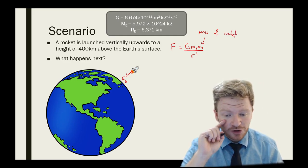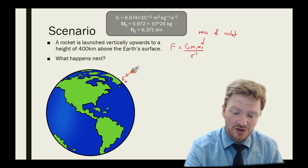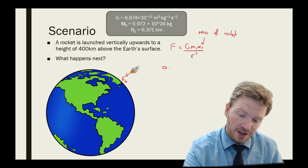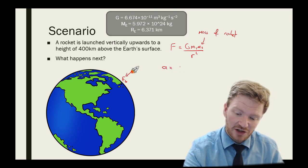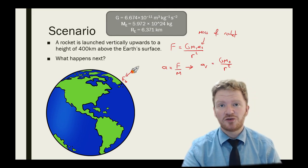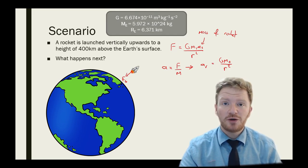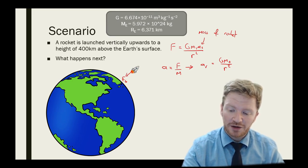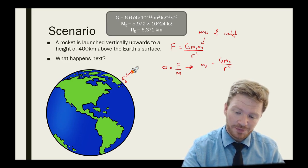However, just because we don't know the mass of the rocket, we can still say there's going to be a force acting on my rocket, which means there's going to be an acceleration. And I can say that the acceleration is equal to force divided by mass. Therefore, I can say the acceleration of my rocket is equal to G mass of the Earth divided by the square of my distance from the centre of the Earth.